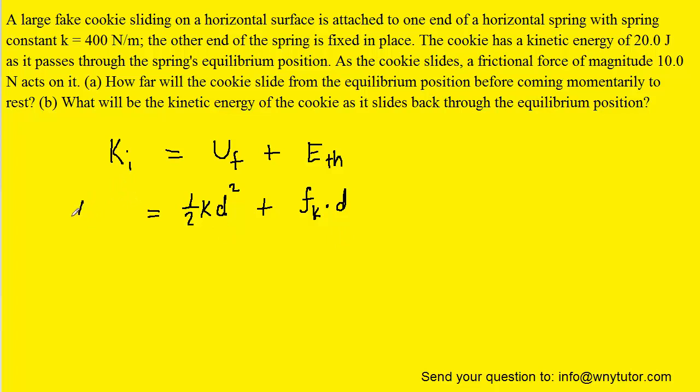And then of course kinetic energy is one-half times the mass of the cookie times its initial speed squared. Now in fact, we don't need to know the mass and the speed of the cookie to get the initial kinetic energy, because the question states that value as being 20 joules. So we can actually replace this entire term here with 20.